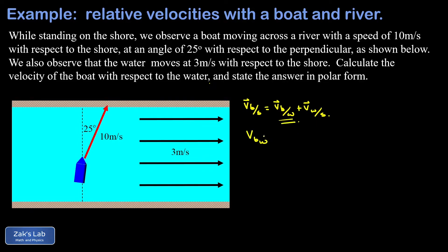This gives us what we want: the velocity of the boat with respect to the water equals the velocity of the boat with respect to the shore minus the velocity of the water with respect to the shore. We need to do a vector subtraction, so we'll break into components.